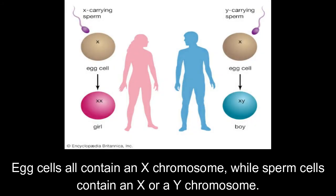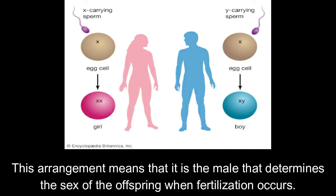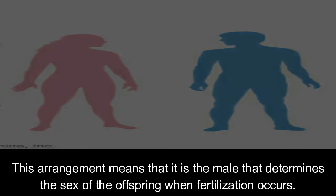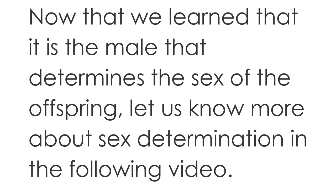Egg cells all contain an X chromosome, while sperm cells contain an X or a Y chromosome. This arrangement means that it is the male that determines the sex of the offspring when fertilization occurs. Now that we learned that it is the male that determines the sex of the offspring, let us know more about sex determination in the following video.